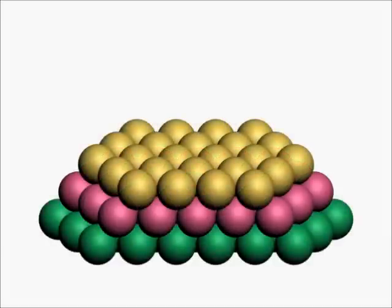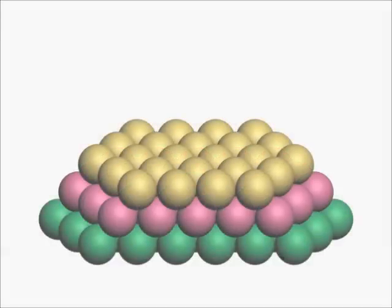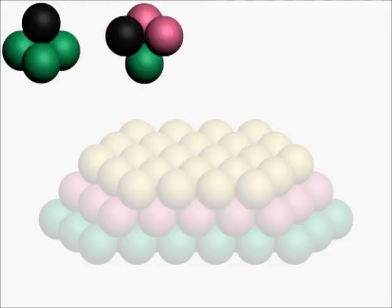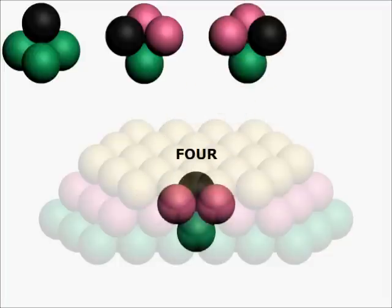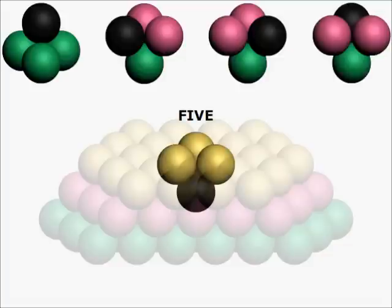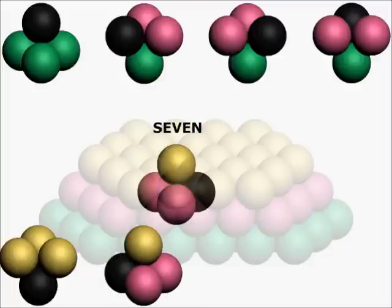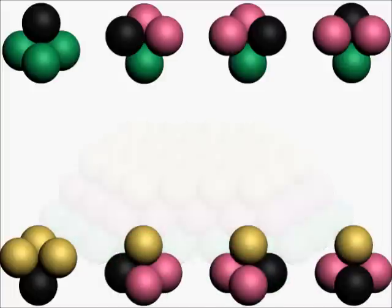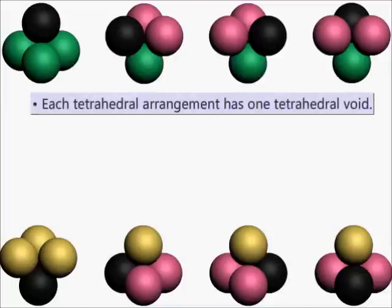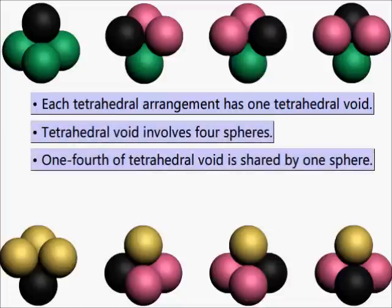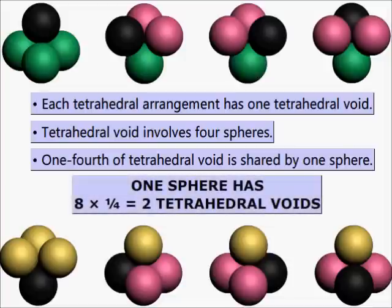Let us count the number of tetrahedral arrangements possible involving this sphere. It is 8. Each tetrahedral arrangement has a tetrahedral void. Since a tetrahedral void involves 4 spheres, one fourth of a tetrahedral void is shared by one single sphere. Therefore, one sphere has 8 × 1/4, which is equal to 2 tetrahedral voids.